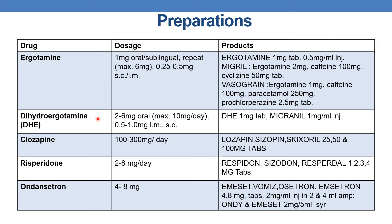The next drug is dihydroergotamine. The dose is 2 to 6 mg oral, with a maximum of 10 mg per day. It is also available as 0.5 to 1 mg intramuscular or subcutaneous injection. Products include DHE 1 mg tablet and Migranil, which is 1 mg per ml injection.